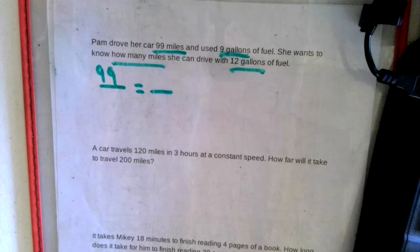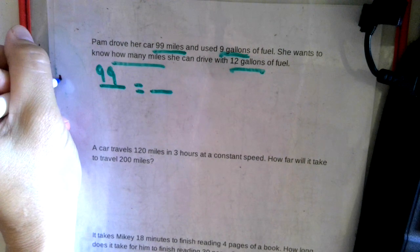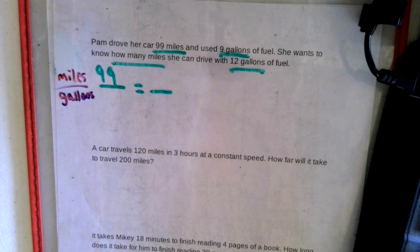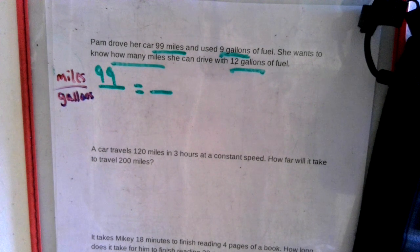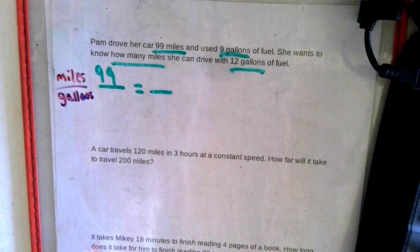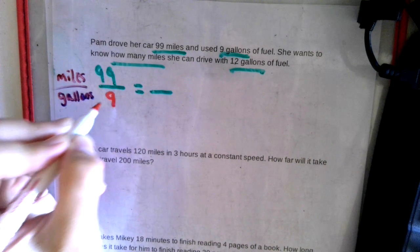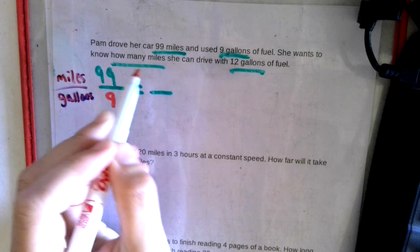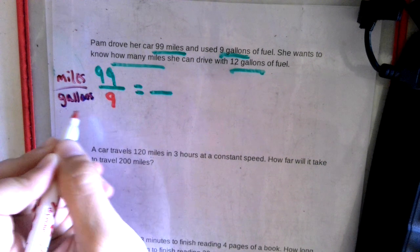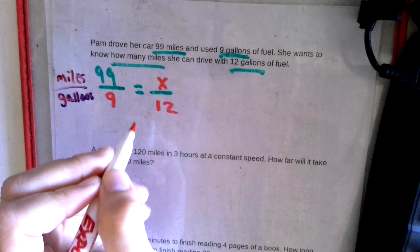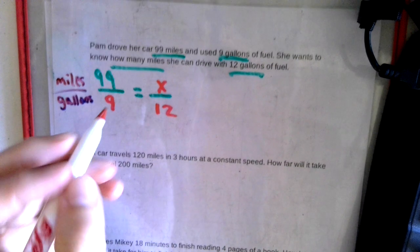99 miles to nine gallons — so we're going to have miles to gallons. Now the top is miles, the bottom is gallons. What are we given here? We're given the gallons, so we have 12. So we're missing this piece. Now we get to solve this.